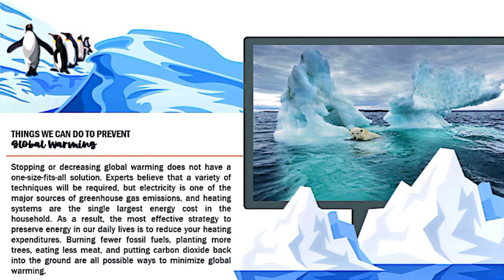Things we can do to prevent global warming: stopping or decreasing global warming does not have a one-size-fits-all solution. Experts believe that a variety of techniques will be required. But electricity is one of the major sources of greenhouse gas emissions, and heating systems are the single largest energy cost in the household. The most effective strategies include reducing heating expenditures, burning fewer fossil fuels, planting more trees, eating less meat, and putting carbon dioxide back into the ground.